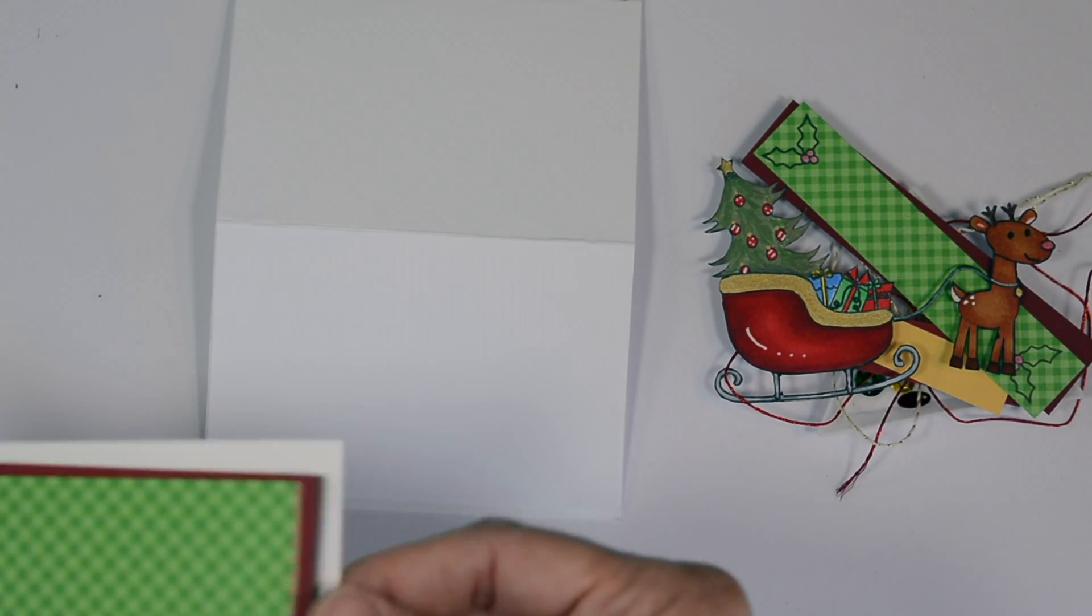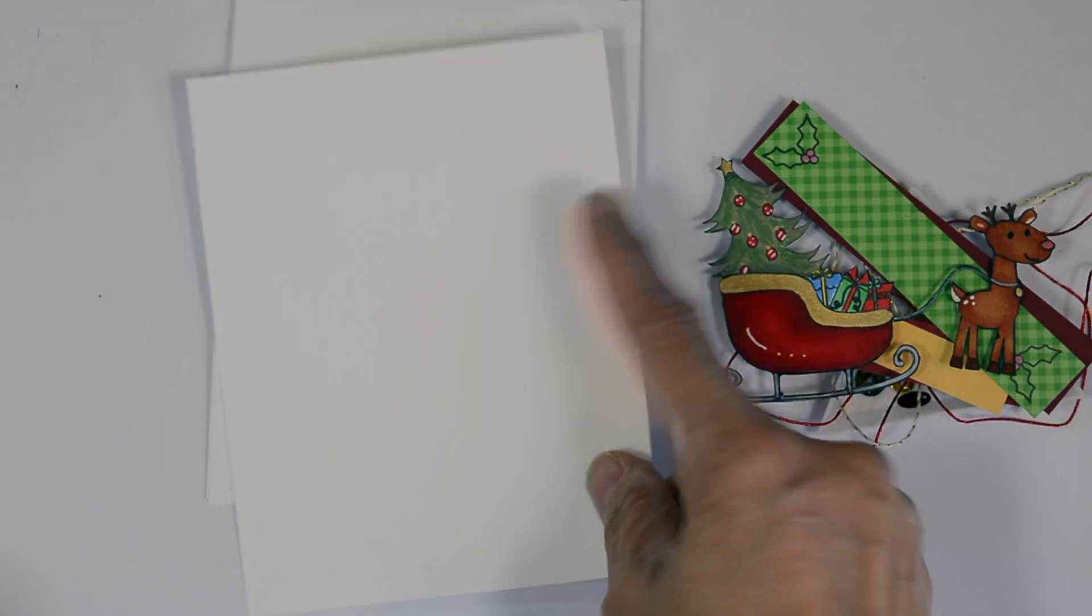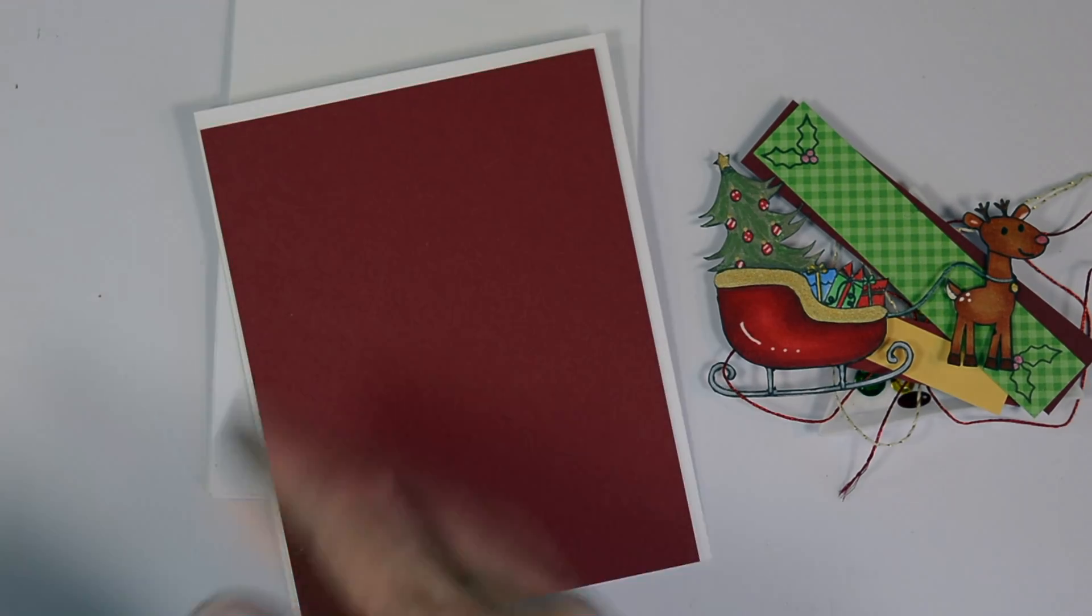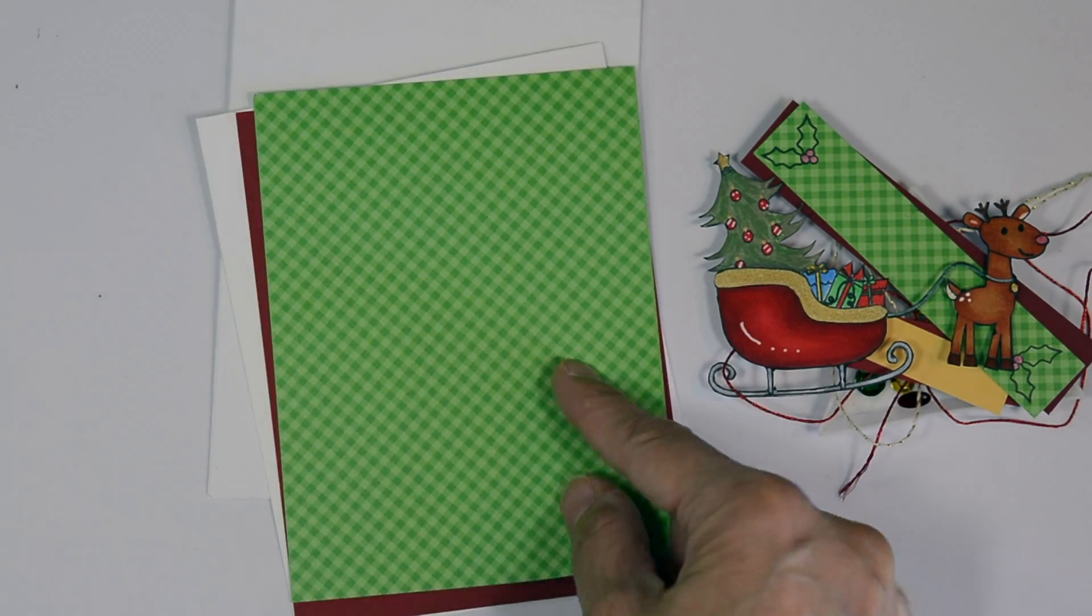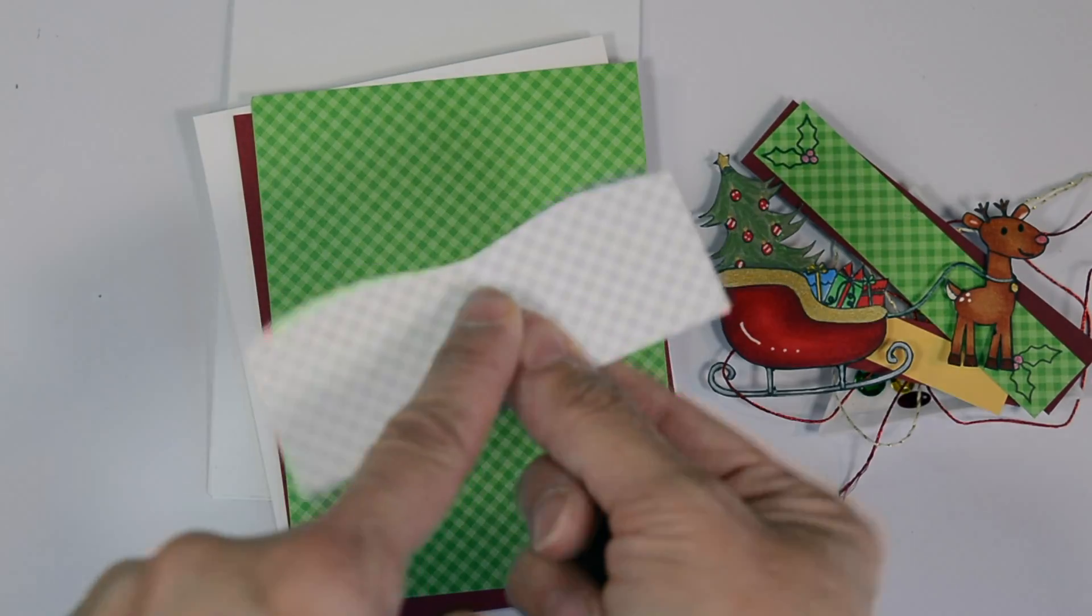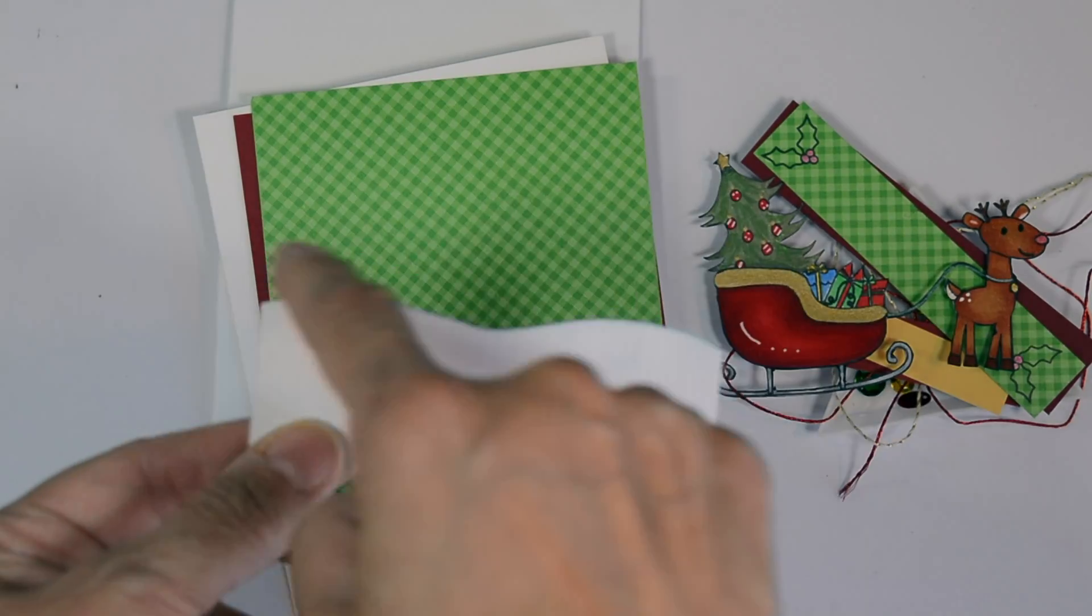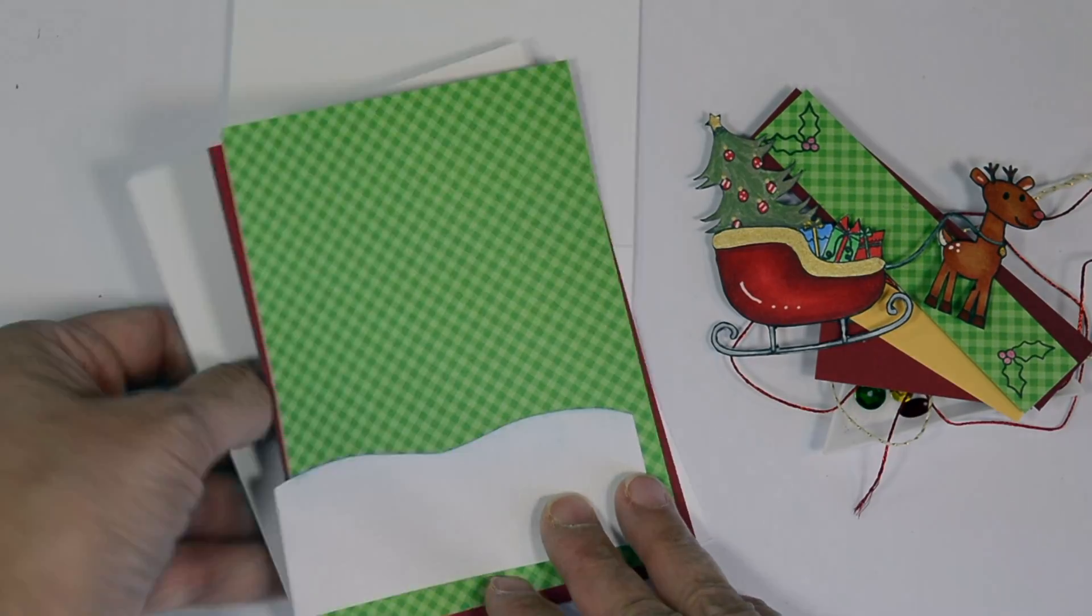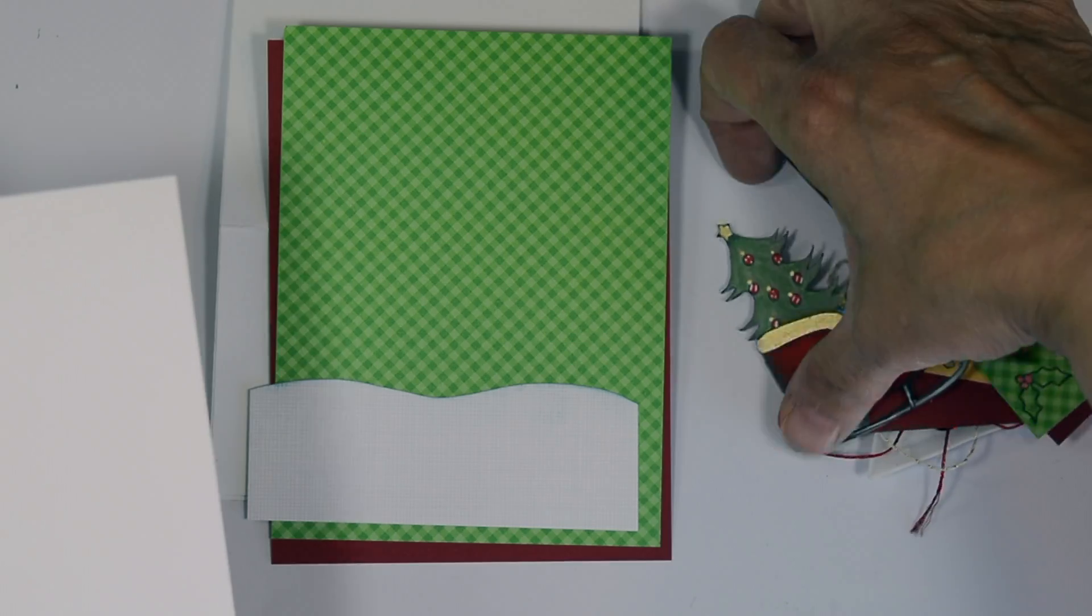To create your easel, you'll have to put a little bar here in the bottom or something, an element, to keep it from folding down. We also have an extra piece of 110 pound white cardstock, 65 pound dark red cardstock, our gingham patterned paper, and our linen white and gray paper that will be our snow.